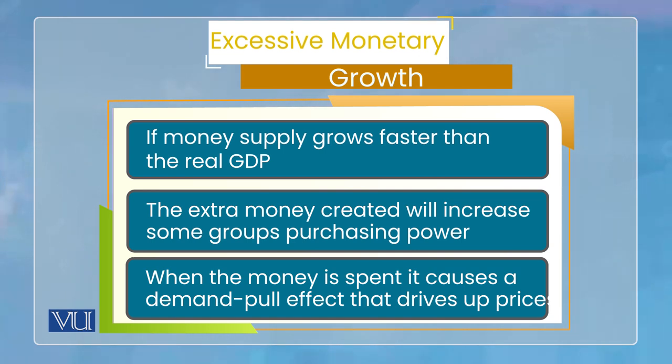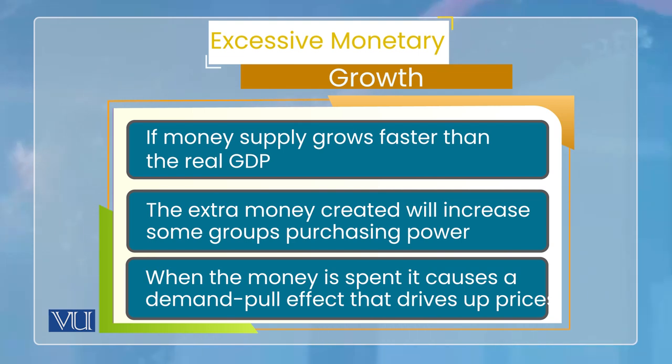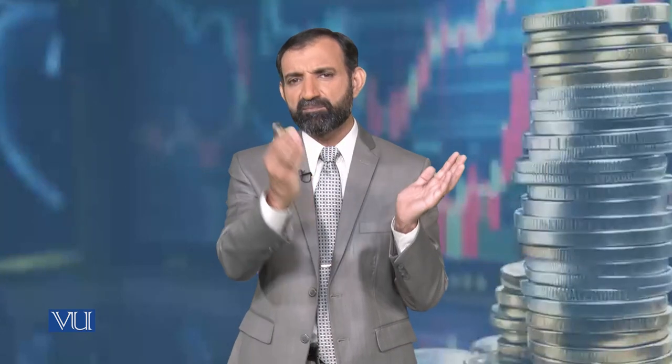آپ دیکھیں: اگر real GDP 5% سے بڑھتی ہے تو transactions کا volume 5% بڑھا، خرید و فروخت 5% بڑھی — تو 5% money بھی چاہیے. لیکن اگر economy نے 5% سے grow کیا اور آپ نے 10% سے money supply بڑھا دی، تو جو extra 5% money آئی وہ کسی کے پاس تو آئے گی. اور وہ money سے لوگ یا assets خریدیں گے یا goods and services — جس سے goods and services کی demand increase ہو جائے گی۔